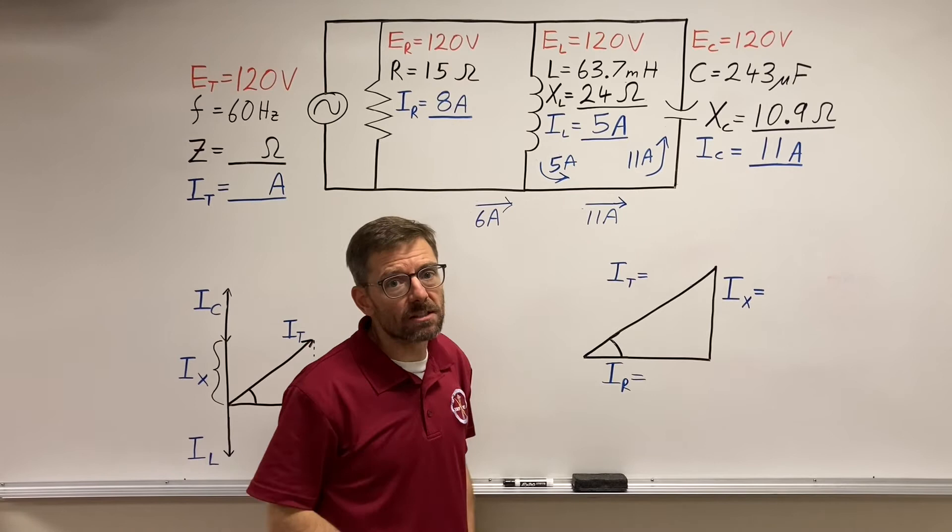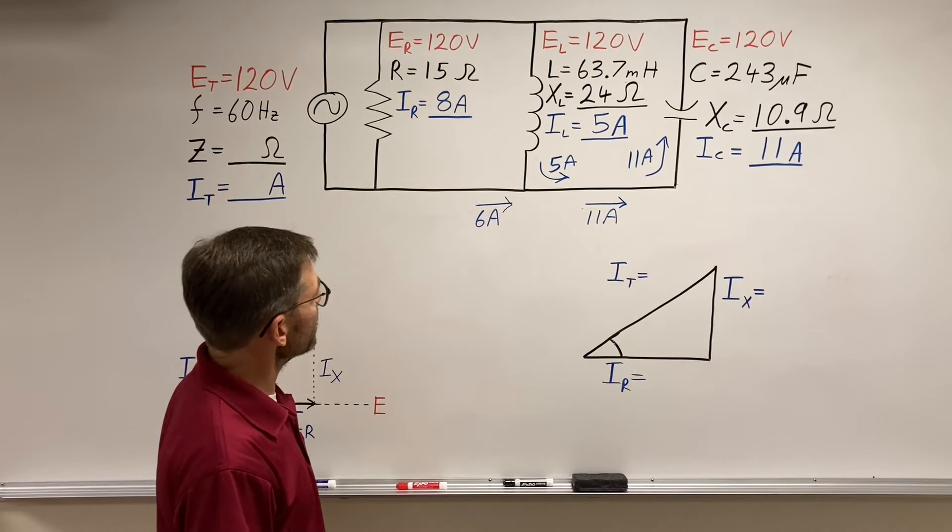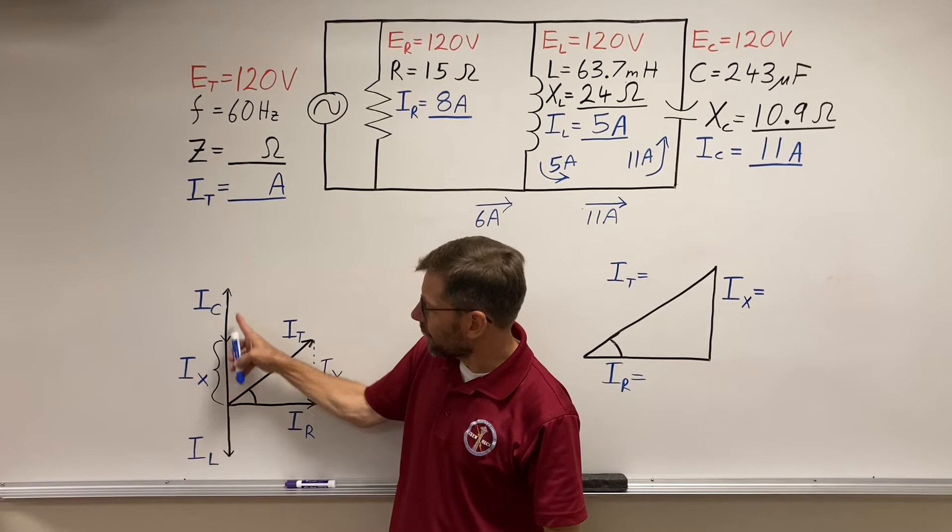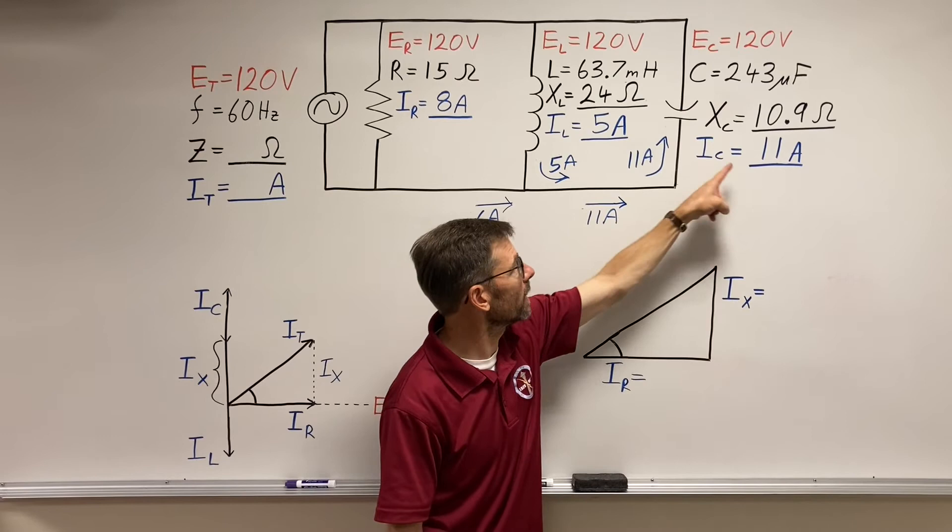So that's my currents. So what does that really mean? That means these net 6 amps are going to the capacitor. So they're pointing up, capacitive direction. That's how I get my 6 amps here. It's the difference between these two. 6 amps. My resistive amps is 8.